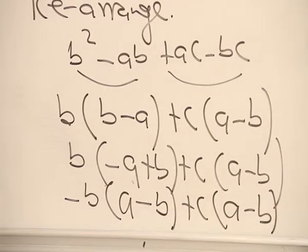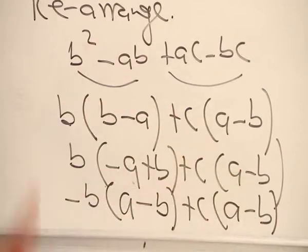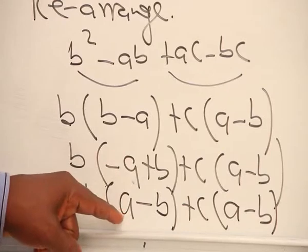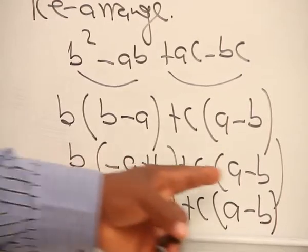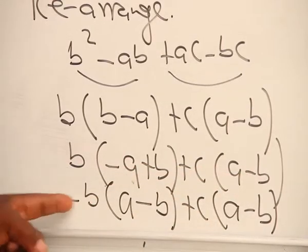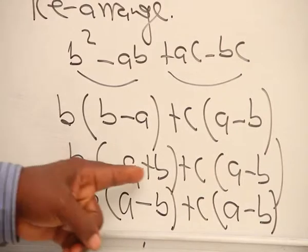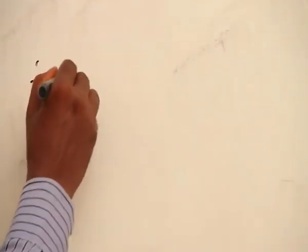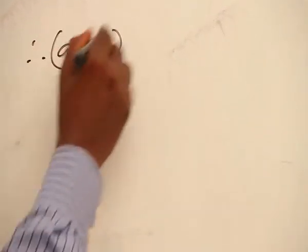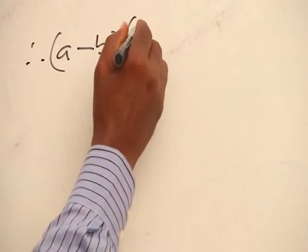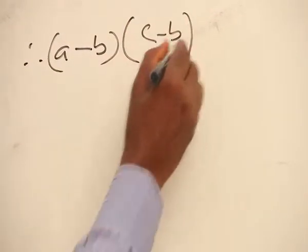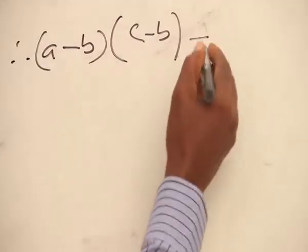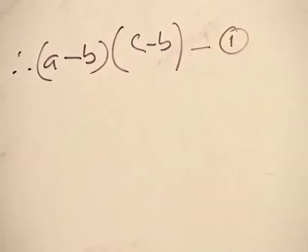Beautiful. So you can now see that a minus b and a minus b are common. We have been able to modify this to be equivalent to this by introducing a minus sign, which also affects the positive sign. Therefore, a minus b and c minus b will be the factors of the factorization of the numerator.